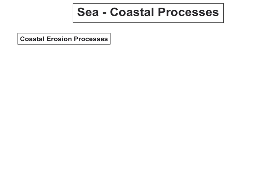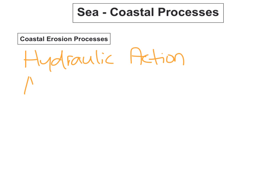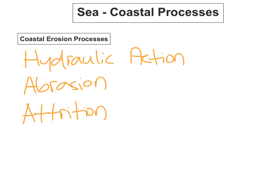There are five ways in which our coasts are eroded through five different processes. They are hydraulic action, abrasion, attrition, air compression, and the last one is solution.